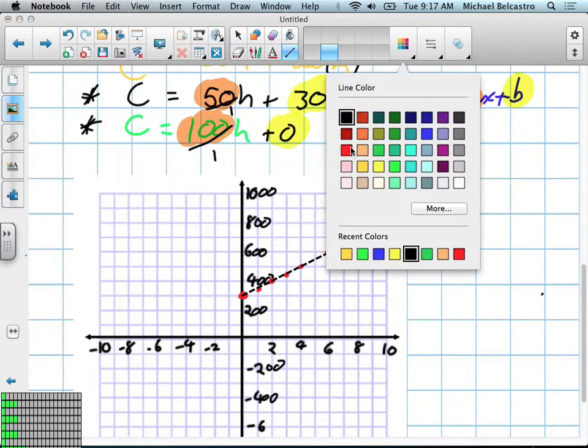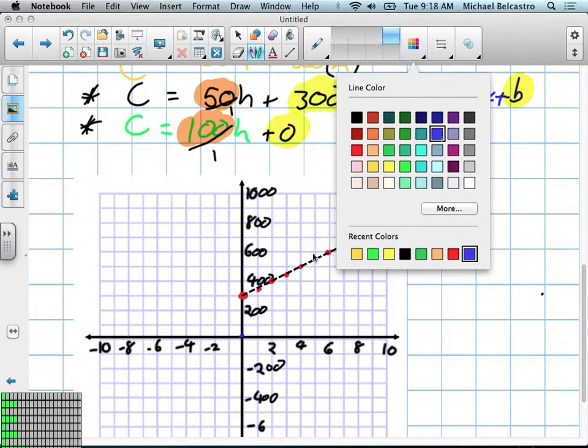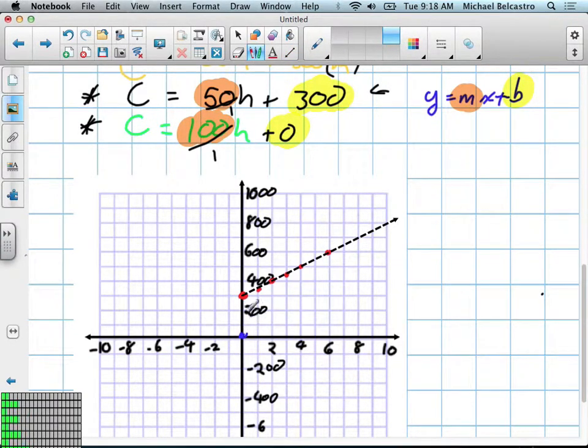Our second expression, what's the y-intercept? Zero. Zero. That's right. So it starts down here. It starts down there, and it goes up 100 and over what? Up 100 over 1. Up and over. So we're going to continue this until we find the point where they hit each other. So let's put another line.